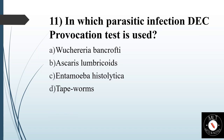Eleventh question. In which parasitic infection is the DEC provocation test used? Option A: Wuchereria bancrofti. Option B: Ascaris lumbricoides. Option C: Entamoeba histolytica. Option D: Tapeworm. Answer is Option A: Wuchereria bancrofti, that is a filarial worm.